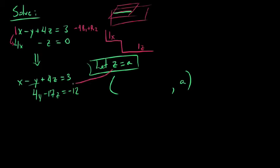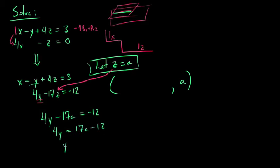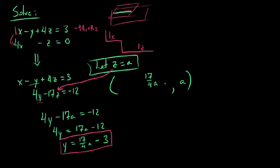What we can do now is back-substitute z = a into our second equation to solve for y. If we put this into our second equation, we get four y minus seventeen a equals negative twelve. So four y equals seventeen a minus twelve. Dividing everything by four, we get y equals seventeen fourths a minus three, because twelve divided by four is three.